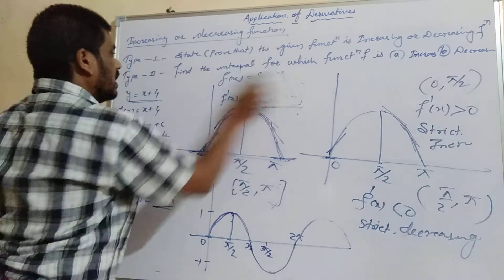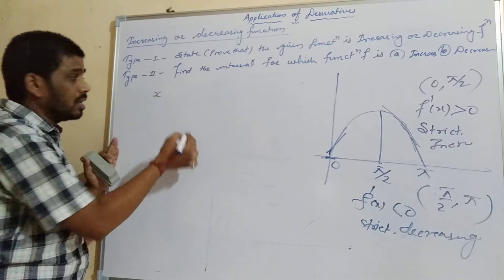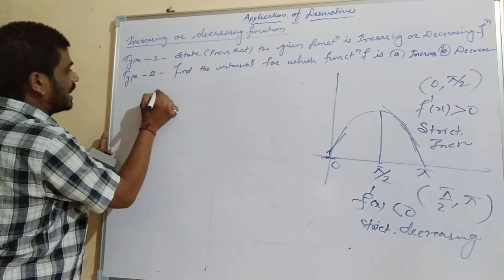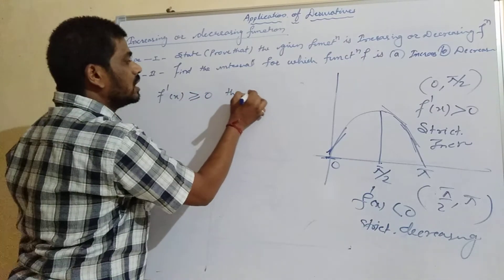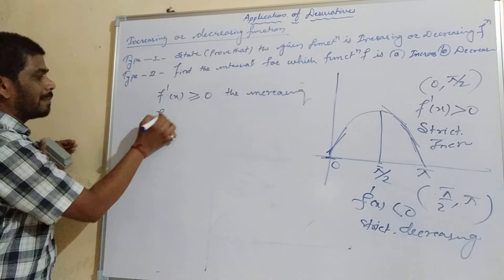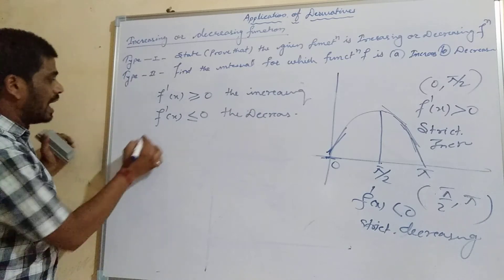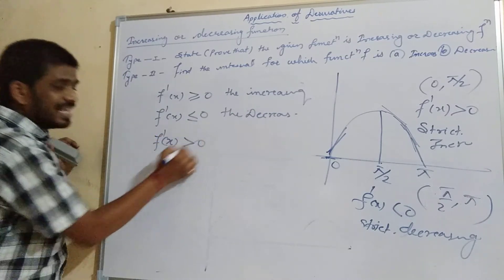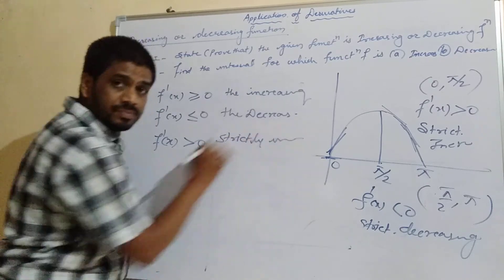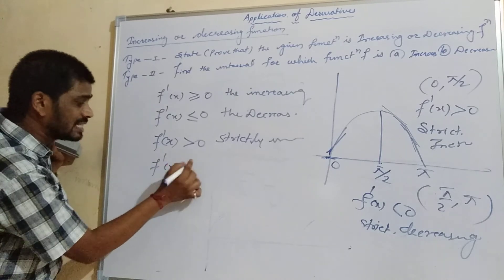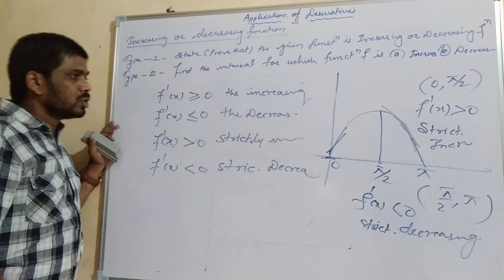So to summarize: when f dash of x is greater than or equal to 0, the function is increasing. When f dash of x is less than or equal to 0, the function is decreasing. When f dash of x is strictly greater than 0, the function is strictly increasing. And when f dash of x is strictly less than 0, the function is strictly decreasing. Let's now look at a question on this.